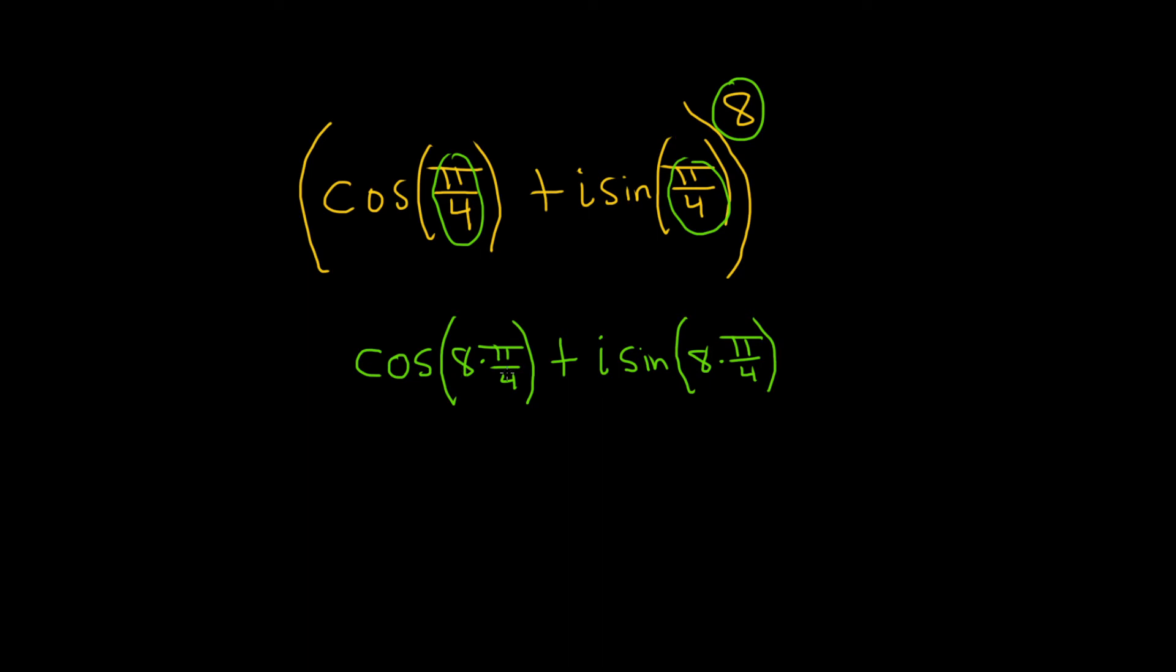All right, let's clean this up. So eight times pi over four, the four goes into the eight twice, so we get cosine of two pi plus, same thing here, we get i sine of two pi.